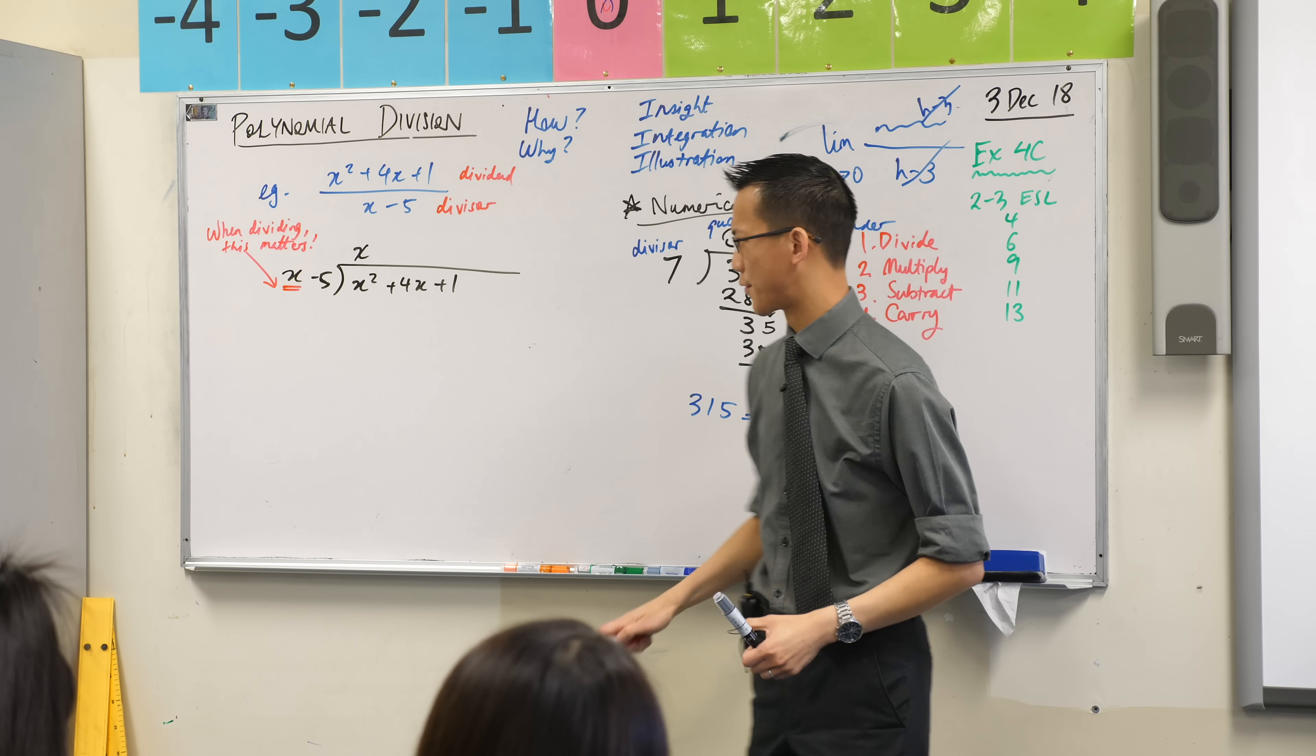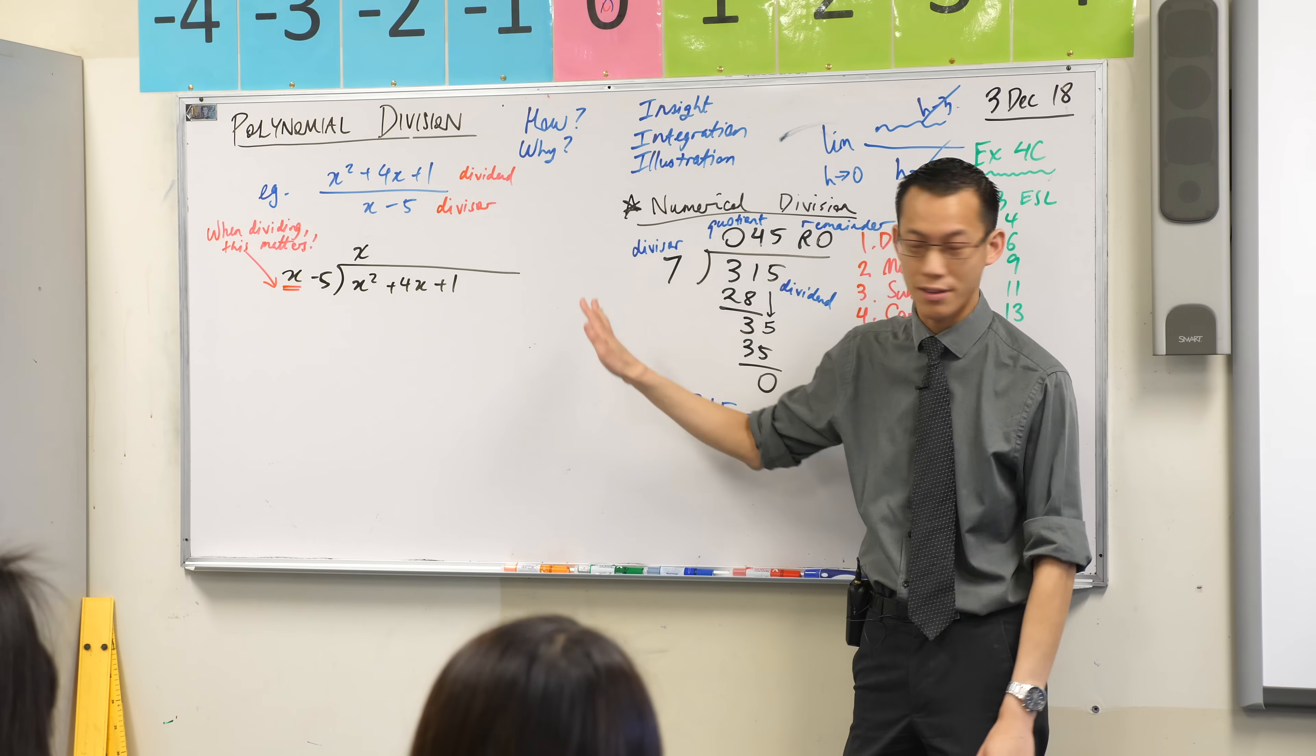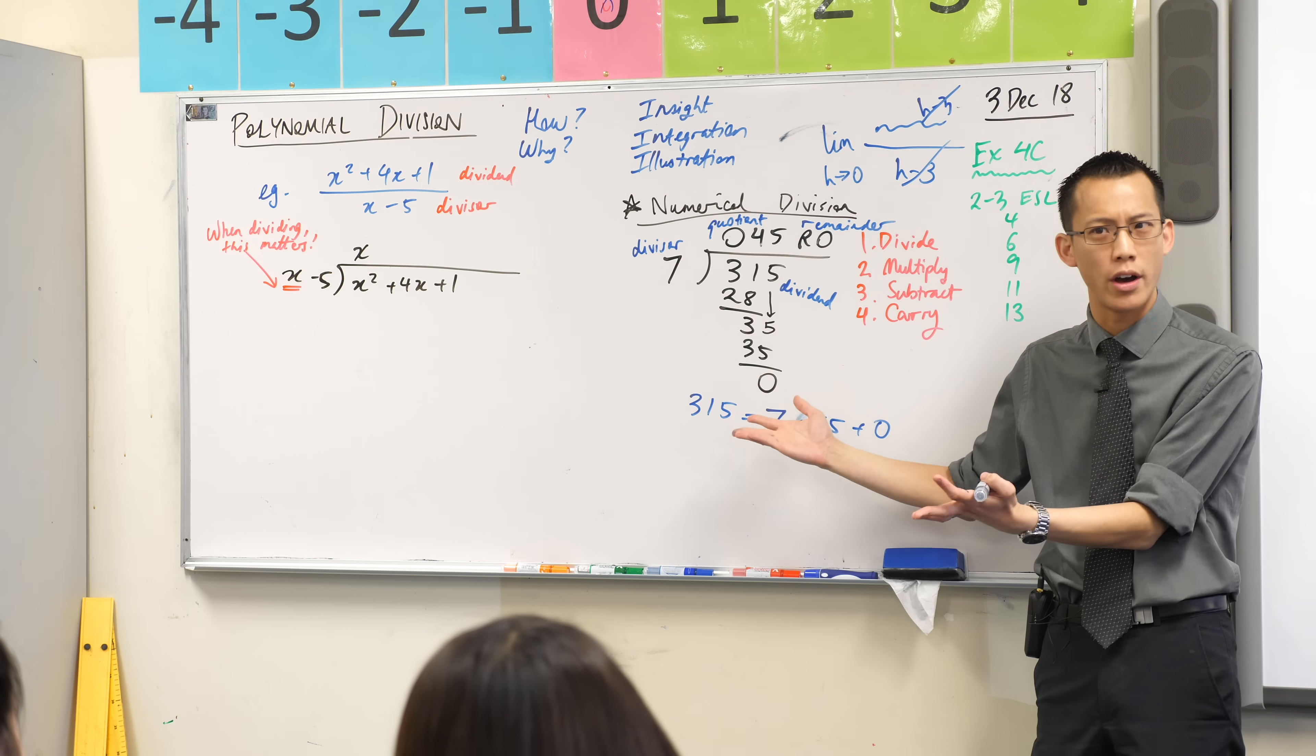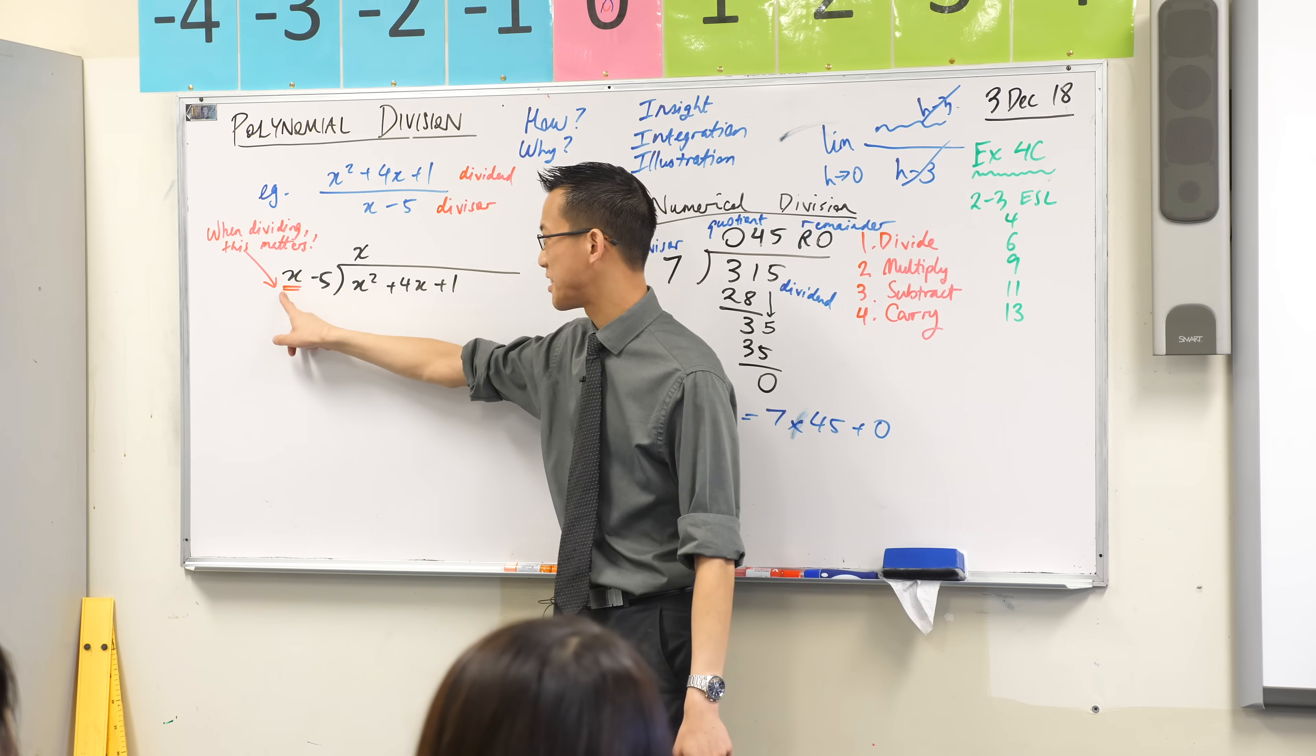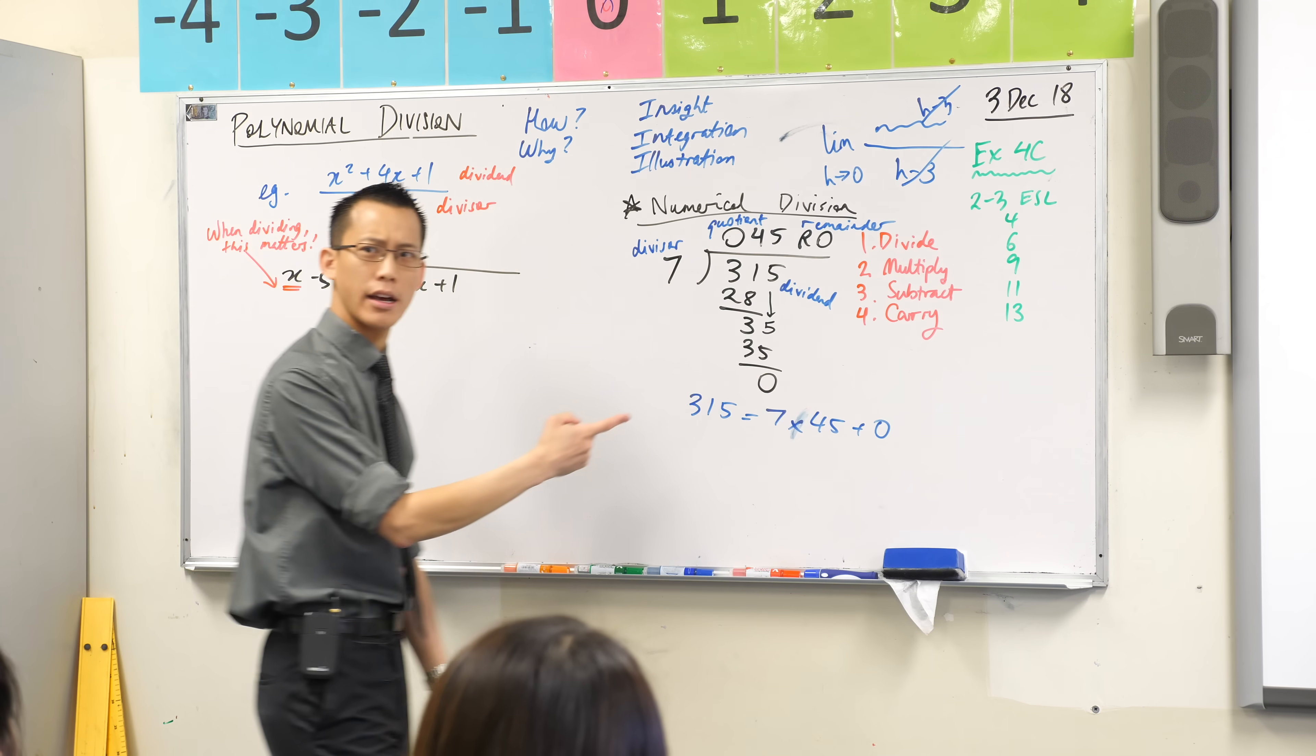Now, your brain might still be a bit uncomfortable with that because we didn't do that over here. We didn't just say, oh, I'm going to ignore part of the 7, okay? But hopefully by the time we get to the end of this algorithm, this step, you'll be convinced that, oh, it does work. This is an okay thing to do, okay? So we just did step one. We divided, we said x goes into x squared, x times. What was the next thing that I did?